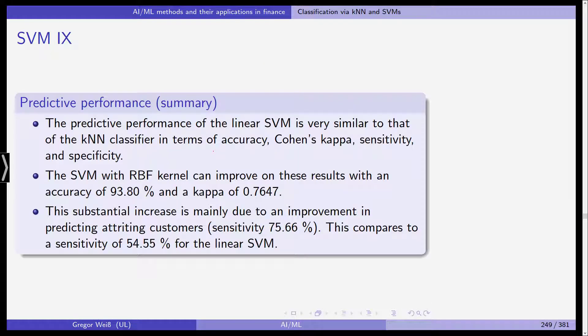So the predictive performance of the linear SVM is very similar to the k nearest neighbor classifier in terms of accuracy, kappa, sensitivity. The support vector machine with a non-linear radial basis function kernel improves on this, shifting the accuracy to almost 94% and increasing kappa to 0.7647. So this substantial increase is mainly due to an improvement in predicting attriting customers. We've seen this. So the sensitivity is actually higher in this case and almost 20% higher in comparison to the linear support vector machine.